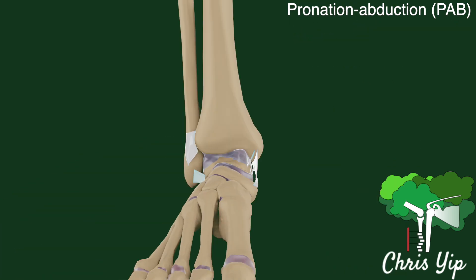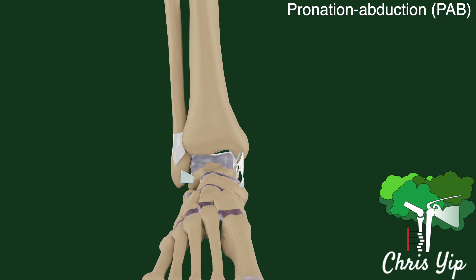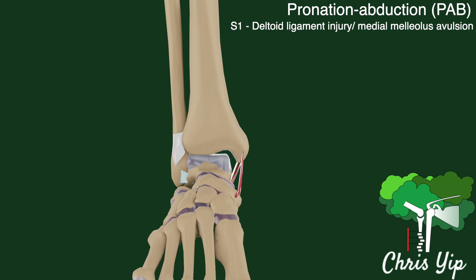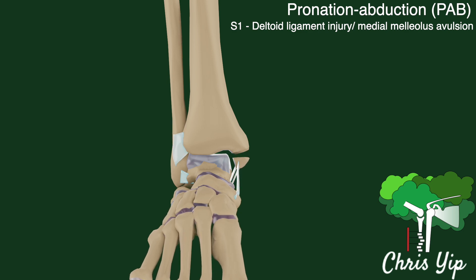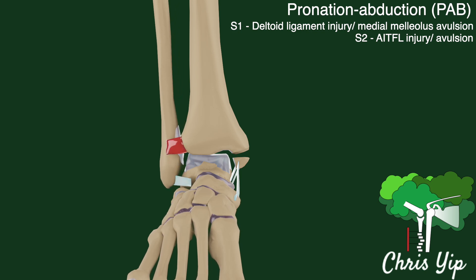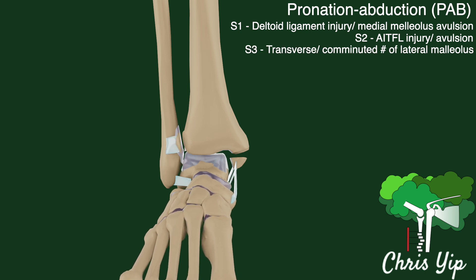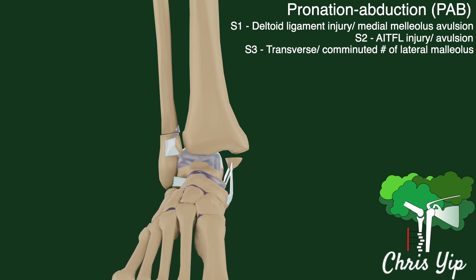The third category of injuries are pronation abduction injuries, starting with the foot in pronation, followed by an abducting deforming force. The deltoid ligament is the first to be strained, causing an injury to the ligament or a transverse avulsion fracture of the medial malleolus. Next, further abduction of the foot will push against the fibula, leading to an anterior inferior tibial fibular ligament injury or avulsion. Then, the fibula itself will be fractured in a transverse or comminuted pattern proximal to the tibial plafond.